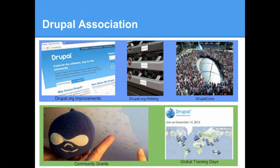We also run DrupalCons — one in North America, one in Europe, and we'll start doing some more in other regions. This is a great event that brings people together in person, helps accelerate the project through code sprints, and creates community bonds between people working virtually around the world. It's a great marketing platform to promote the project as well. We also have a Community Grants program — if you have an idea for promoting Drupal, whether growing the developer base or reaching different industry sectors, you can apply for a grant.